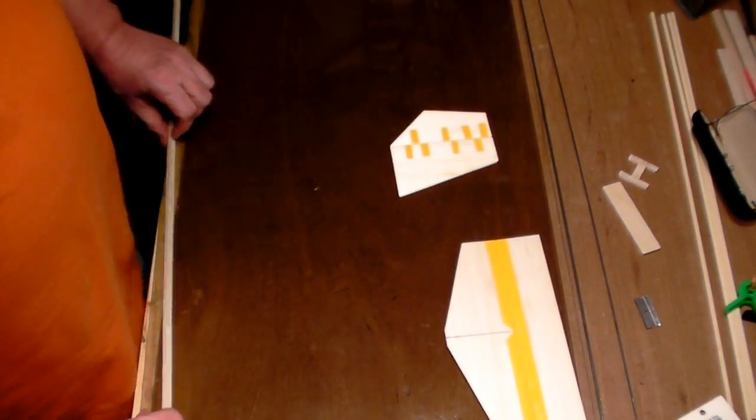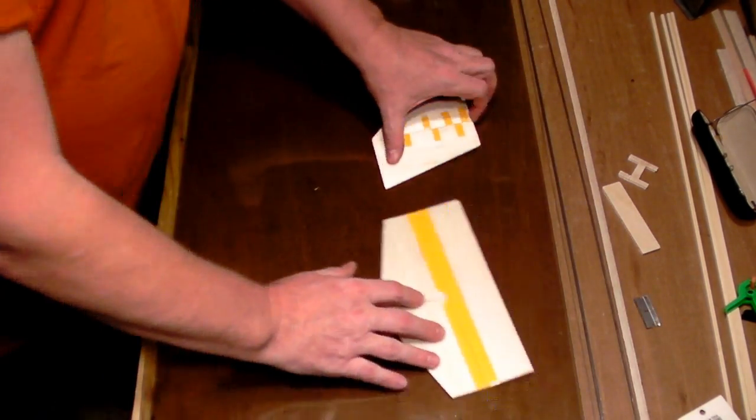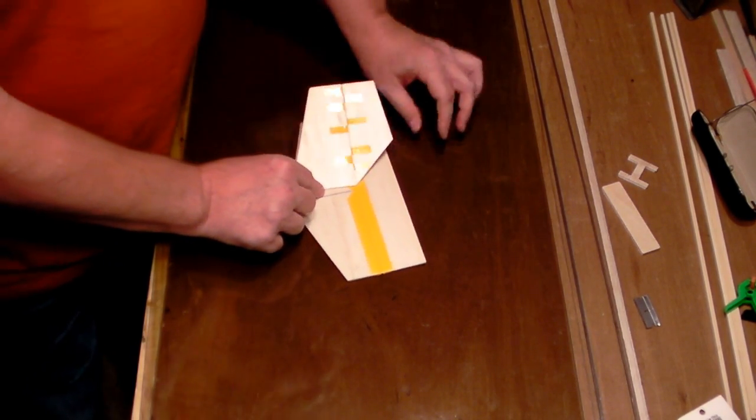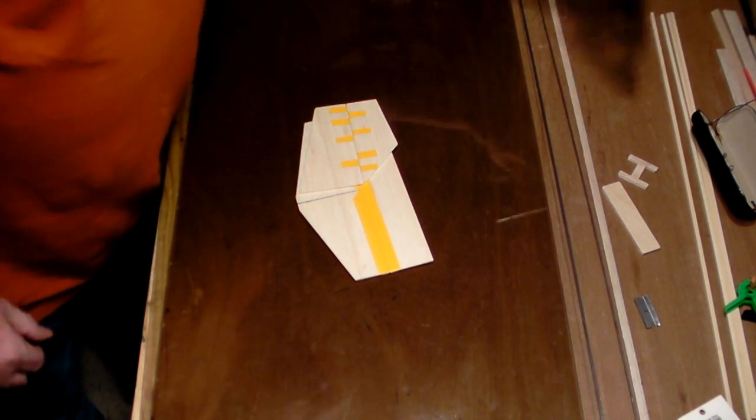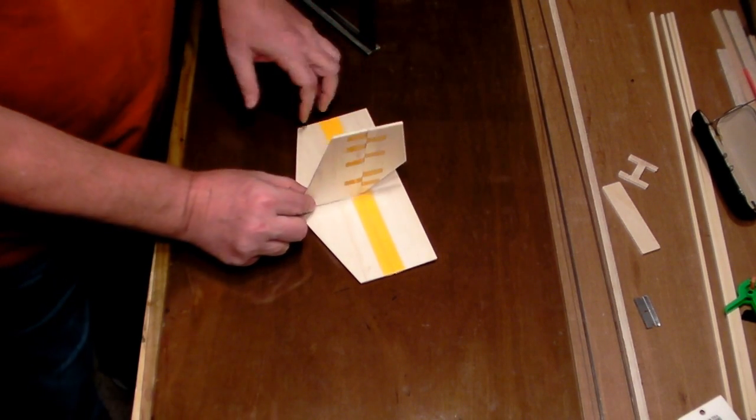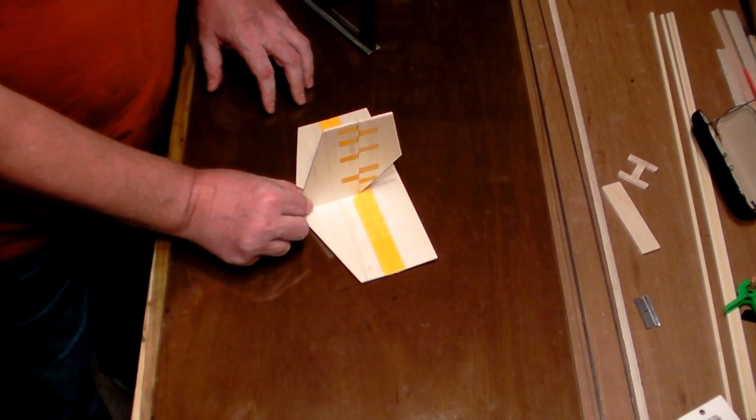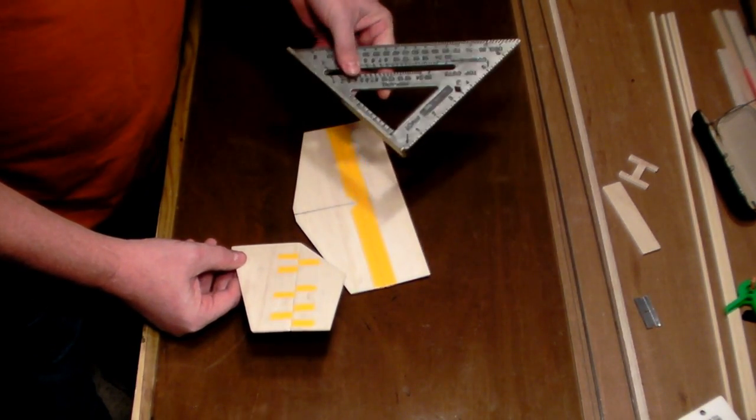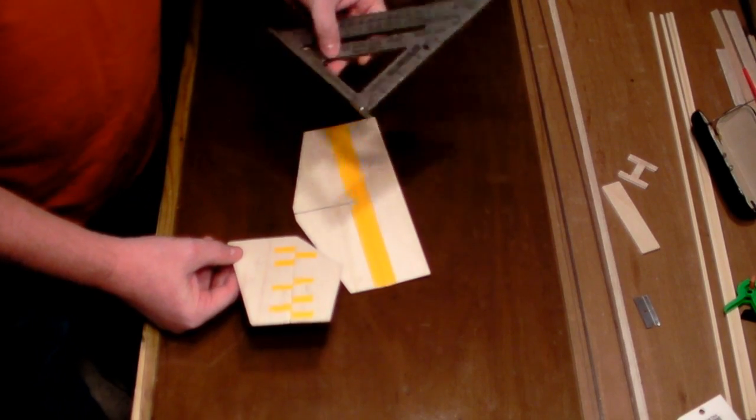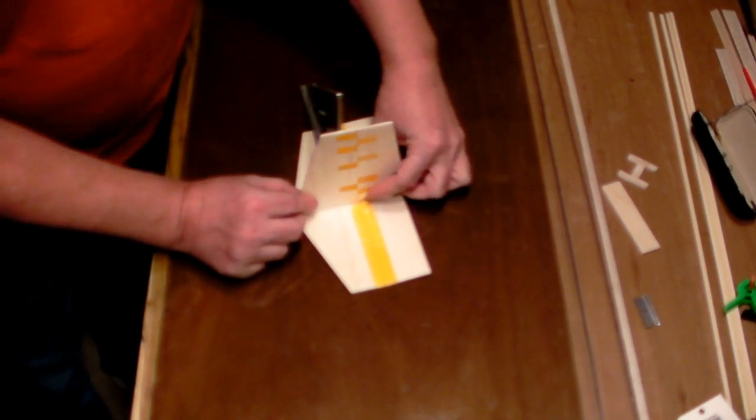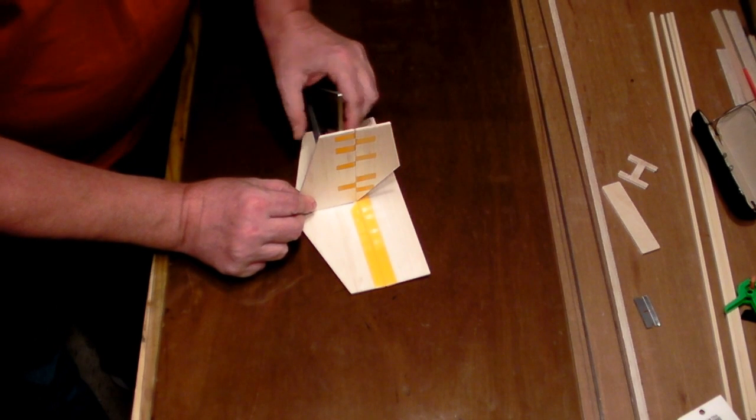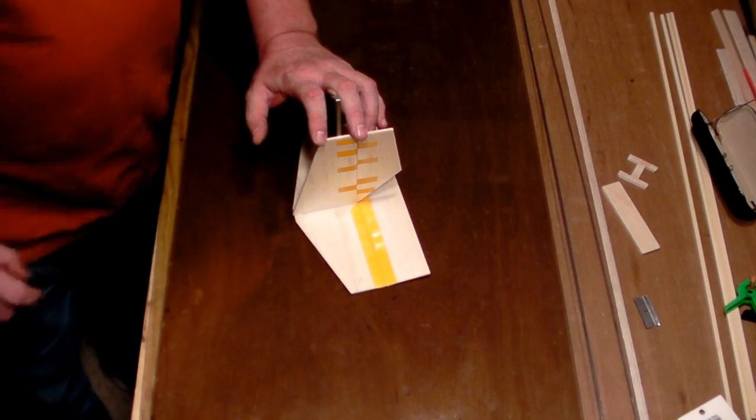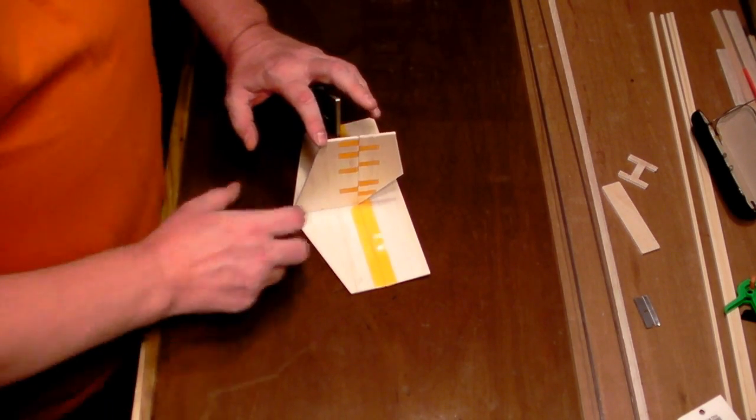For our next step, we are going to glue our vertical to our horizontal. We're going to reference this line here. A good way to help you be sure that you've got this thing completely perpendicular, it's not leaning one way or the other - I've got a speed square. This is just a carpenter's speed square. I can line this up, get it where I want it to be, make sure it's perfectly square and then hold it while the glue sets.